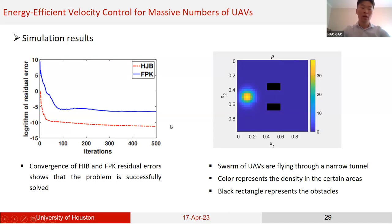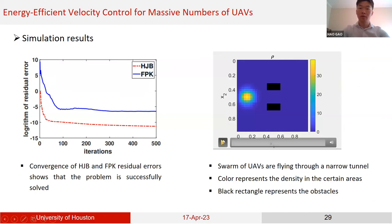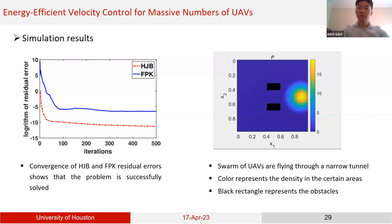Here are some simulation results. First we confirm the problem is solved by checking the convergence of HJB and FPK residual errors, showing the problem is successfully solved. We also show a small experiment of controlling a group of UAVs: the swarm flies through a narrow tunnel. Different colors represent the density of UAVs in a certain area, and the black rectangles represent obstacles. As you can see, the UAVs fly from left to right and can cross obstacles.